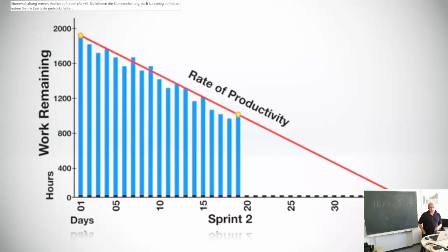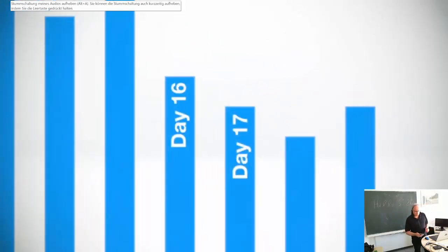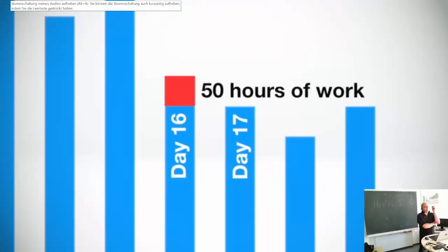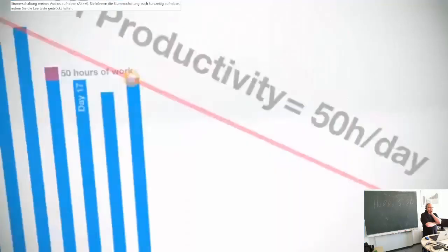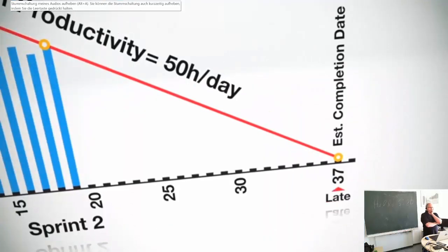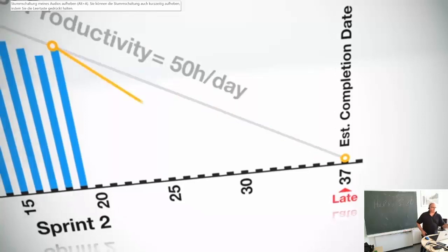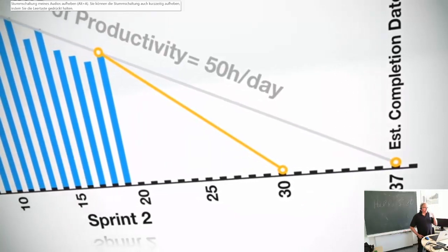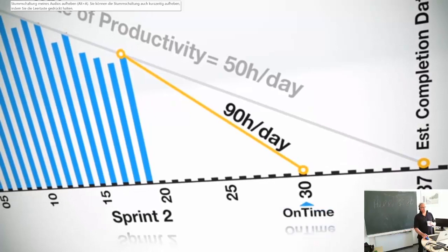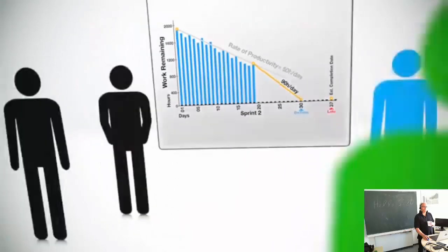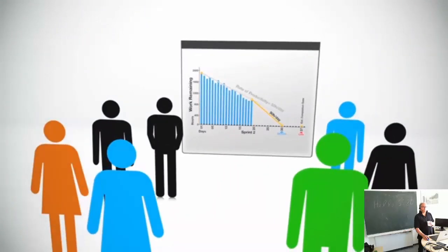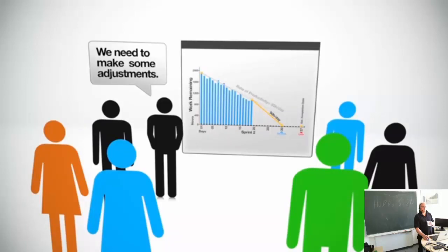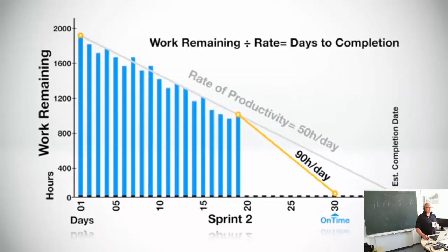The burndown velocity is the average rate of productivity for each day. For example, a team's rate of productivity might be that on a typical day they finish approximately 50 hours of work. Knowing that, it's possible to calculate an estimated completion date for the sprint, or even for the entire release. What's great about the burndown chart is that we can compare our actual velocity and projected completion date to what the team needs to do in order to finish on time. Knowing whether or not the project is on track early in the schedule can help teams make the proper adjustments necessary, providing empirical proof that the project is on track — or if it's going to be late.